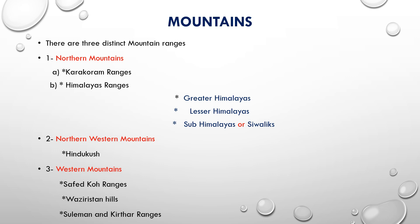In the northern mountains we will study the Karakoram ranges and Himalaya ranges. In the Himalaya ranges there are three subtypes according to height: Greater Himalaya, Lesser Himalaya, and Sub-Himalaya. In the northwestern mountains we will study Hindu Kush, and in the western mountains we will study Safed Koh ranges, Waziristan Hills, and Sulaiman and Kirthar ranges.